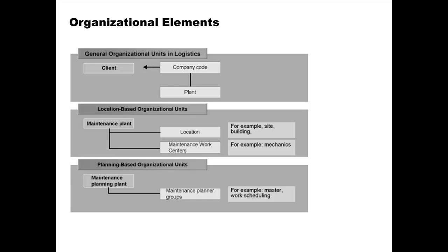Another important organization level in plant maintenance is the maintenance planning plant, as opposed to a maintenance plant. A maintenance planning plant is one that performs planning for maintenance activities. They are themselves regular maintenance plants, but in addition to their normal role they also perform the planning of maintenance activities for other plants.